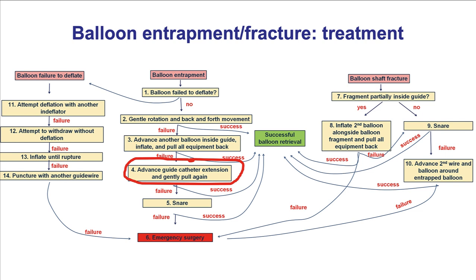Moving on to balloon entrapment: if the balloon becomes entrapped into the lesion, several simple things can be done. First, try gentle rotation and back-and-forth movement, which may release the balloon from the surrounding plaque. Another option is to advance another balloon inside the guide catheter, inflate it to trap the shaft of the entrapped balloon, and then pull everything back, providing extra retention to minimize risk of shaft fracture. Deep-seating the guide or advancing a guide extension close to the balloon, then pulling back, is also an option, as is using a snare.